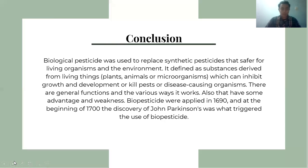In conclusion, biological pesticides are used to replace synthetic pesticides and are derived from living organisms. They are defined as substances derived from living things like plants, animals, or microorganisms, which can inhibit growth and development or kill pests or disease-causing organisms. There are general functions of biopesticides, and they have both advantages and weaknesses. Biopesticides were applied as early as 1690, and the discoveries of John Parkinson in the early 1700s helped trigger the broader use of biopesticides.